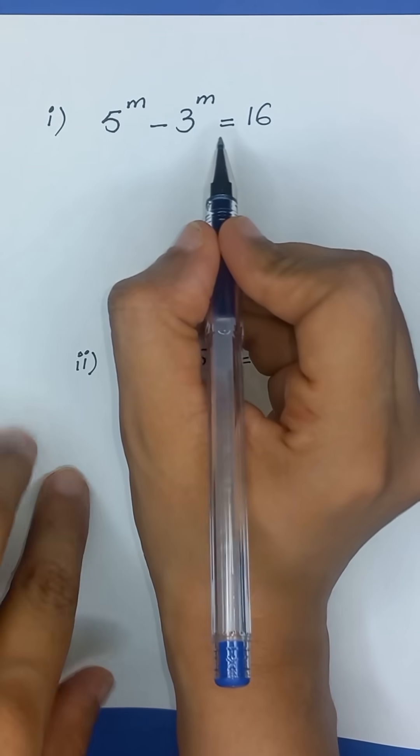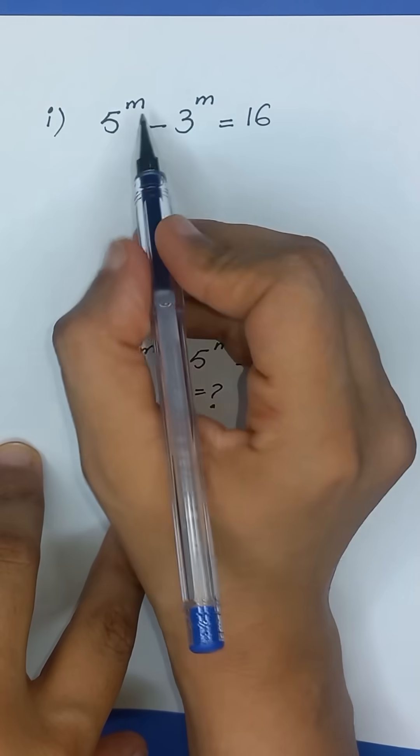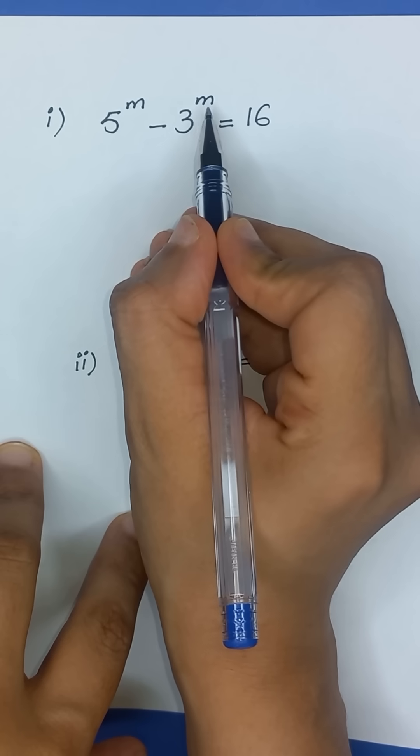5 to the power m minus 3 to the power m is equal to 16, and we have to find the value of unknown variable which is m.